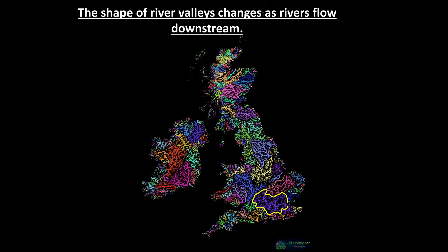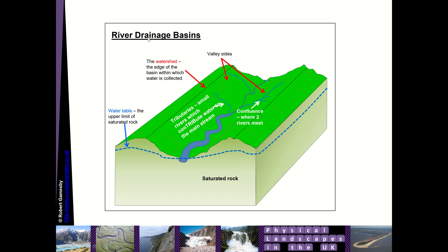Your drainage basin is the area of land drained by a river and all of its tributaries. The watershed is the edge area there that you can see, which all the water is collected. We have the valley sides up there and then we have these small rivers that feed into the main river. The small rivers are called tributaries because they contribute water to the mainstream, and those tributaries meet at confluences.